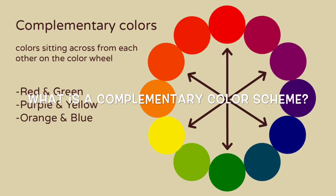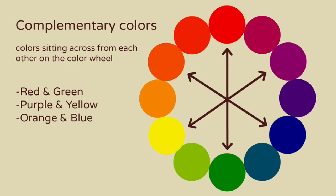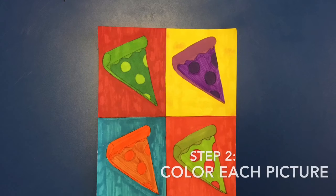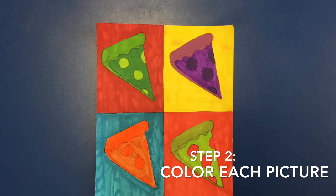What is a complementary color scheme? A complementary color scheme is when you use two colors that are sitting across from each other on the color wheel, like red and green, purple and yellow, and orange and blue. Step two of our pop art project is to color each picture with a pair of complementary colors.